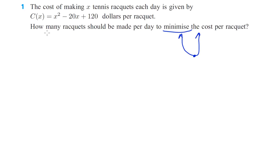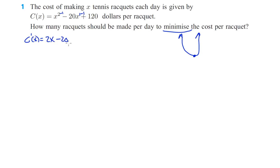We could do this on the graphing calculator, or if we're using calculus, a possibly faster way is to take the derivative. We know that the turning point is the minimum, so the tangent there would be equal to zero. So C prime of X is going to be 2 times X — that's 2X — subtract 1, that's X to the first, so 1 times negative 20 is negative 20. Our derivative is just 2X minus 20.